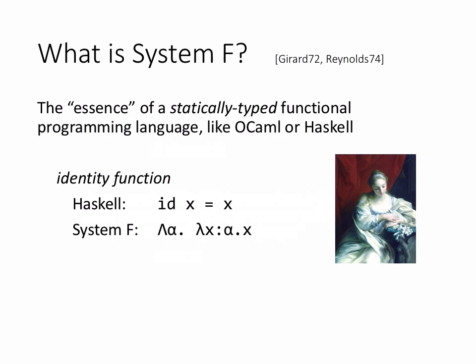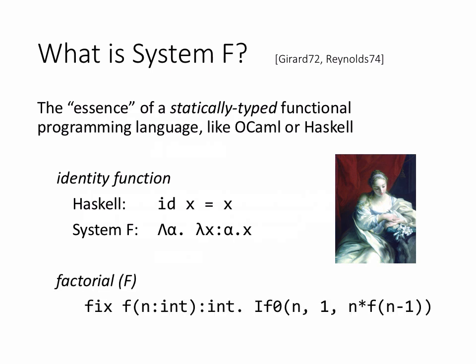System F matches up with what's going on in the core Haskell language — that's the language they're starting with in this paper. They have type abstraction, the ability to define functions, and a way of defining recursive functions using 'fix' annotated with its type. There's a test for zero and some basic operations. It's a pretty small language, but enough to capture the essence of what's going on in ML, Haskell, and other functional programming languages.